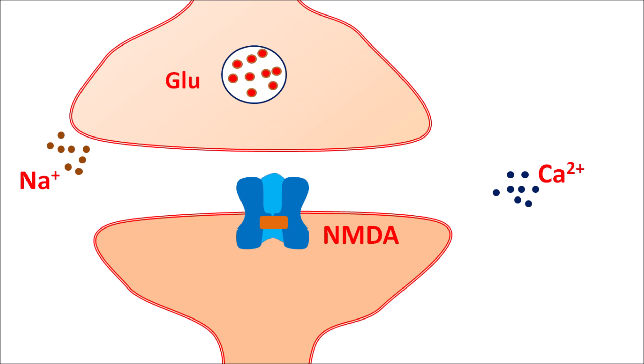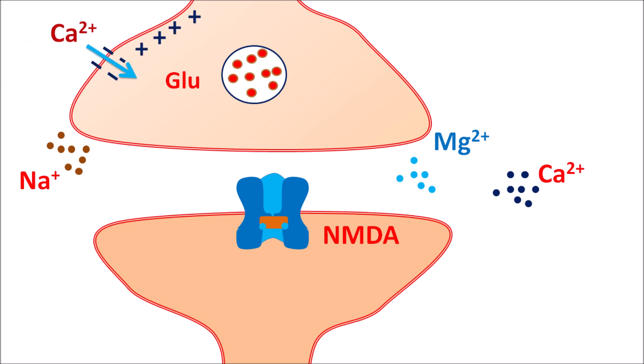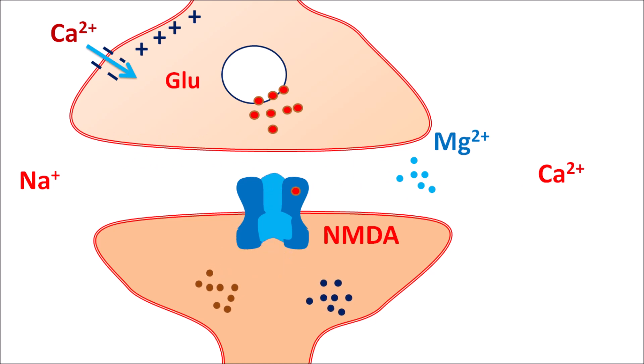The NMDA receptor also requires magnesium ions, which block the receptor so that the ion channel remains closed. When an action potential reaches the presynaptic neurons, calcium enters to produce exocytosis and releases glutamate, which acts on NMDA receptors. Along with glutamate, NMDA receptors also require glycine for activation. By the combined action of glutamate and glycine, NMDA receptors are activated, allowing entry of sodium and calcium ions, resulting in postsynaptic excitation.